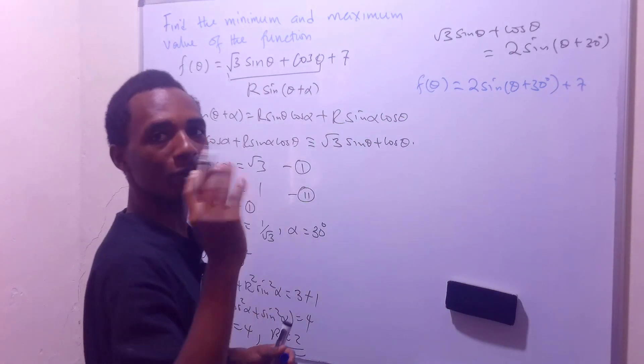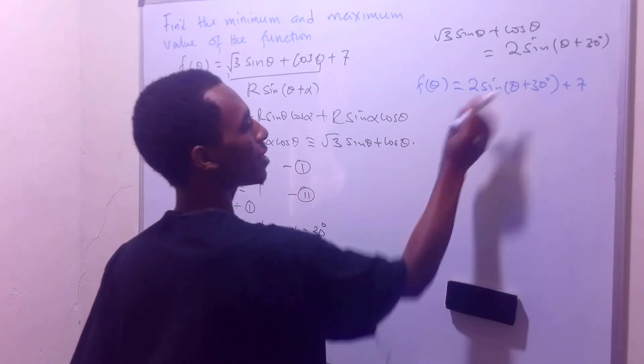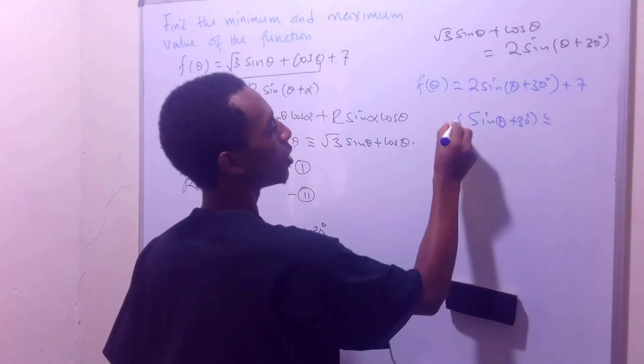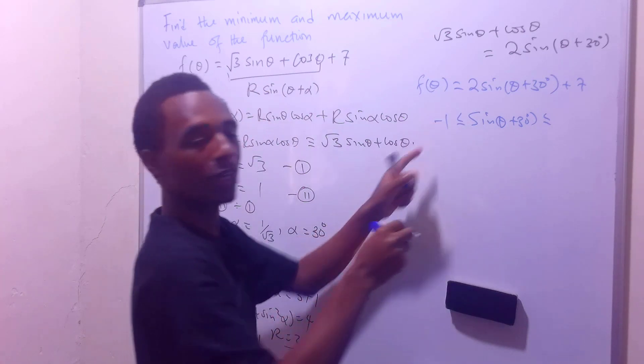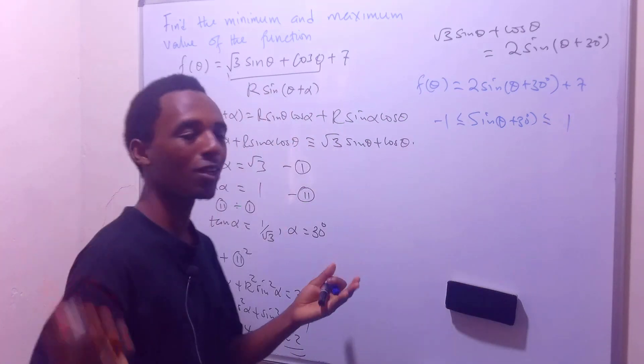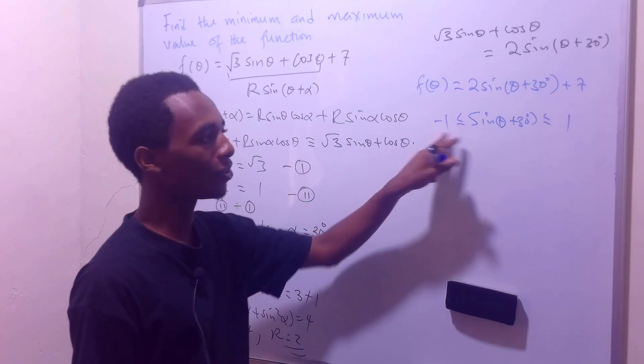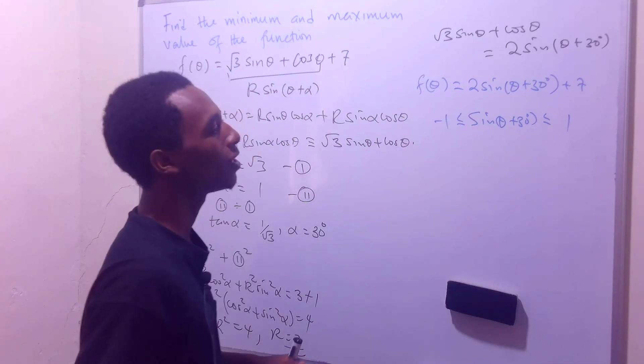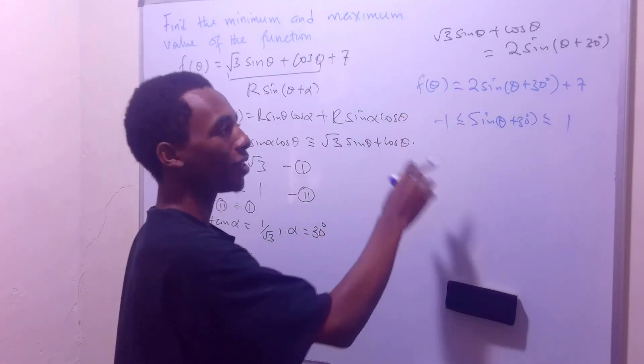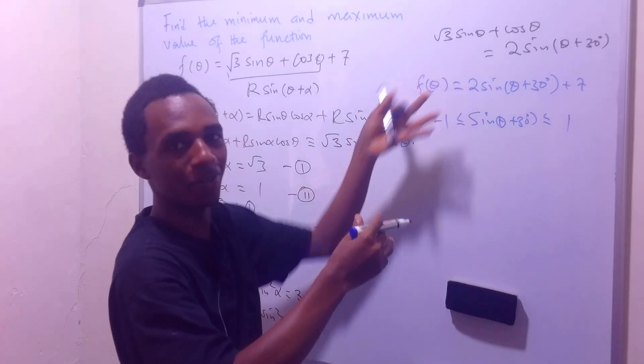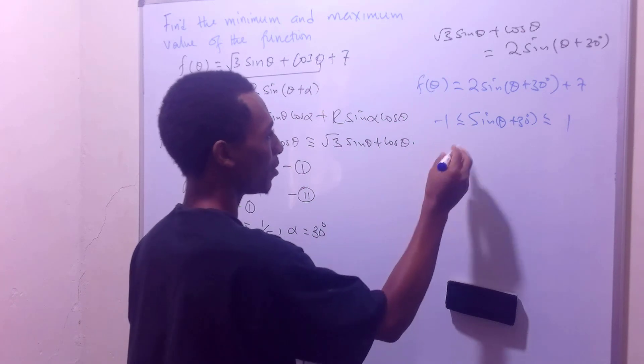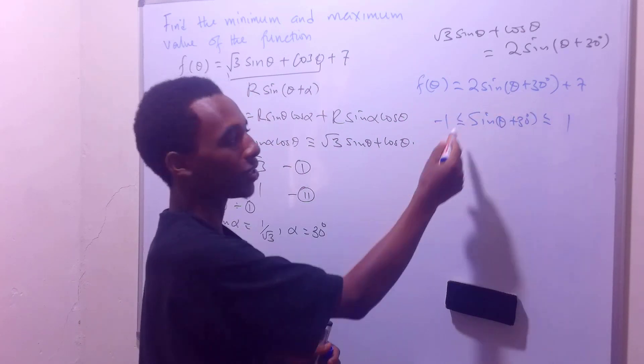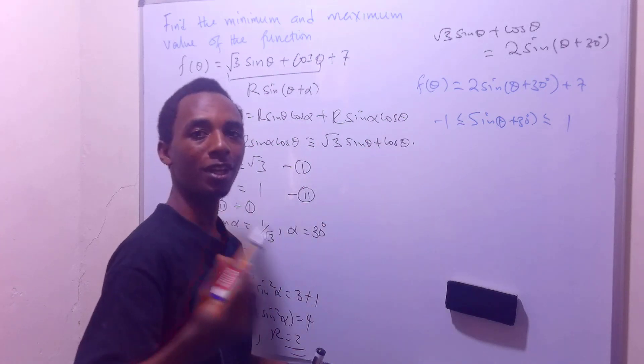And we know that sin(θ + 30°) ranges from negative 1 to 1. Of course, sine and cosine always have this property. They never go beyond negative 1 and 1. So for this function to have the minimum value, we'll take this value, we'll take sin(θ + 30°) to have a value of negative 1.